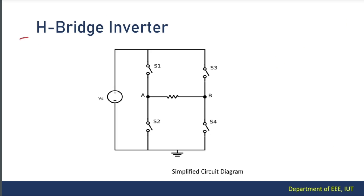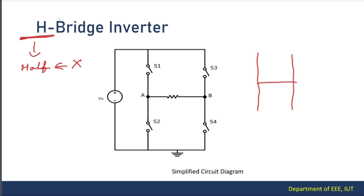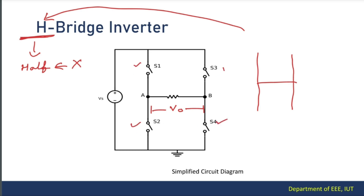Now let's move on to the H-bridge inverter. Don't get confused with the term H — here H doesn't mean half. Some of you might think this is about a half-bridge inverter, but it is not. From the basic diagram of the H-bridge inverter, you can see the shape of the circuit is like the English alphabet H, which is why it's called the H-bridge inverter. This inverter switches the polarity of the voltage applied to the load, which is connected between the AB terminal, so the output voltage is of alternating nature. There are four different switches.